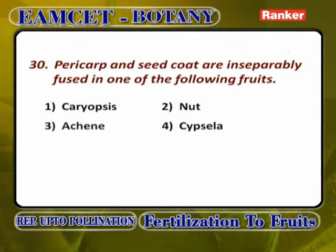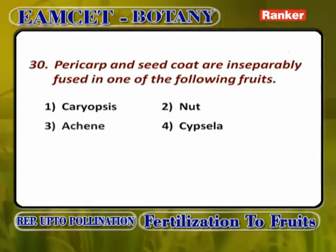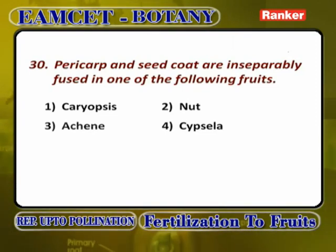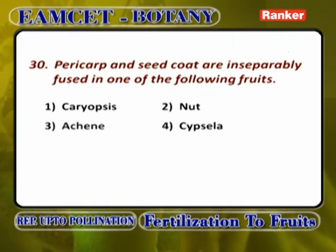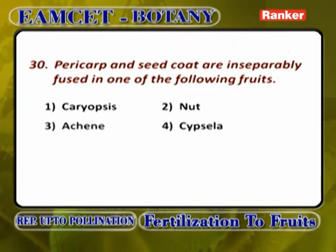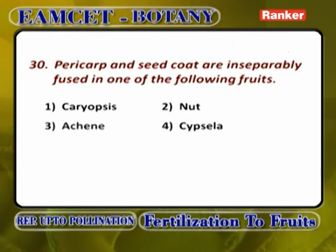Pericarp and seed coat are inseparably fused in caryopsis. In caryopsis, pericarp and seed coat are completely fused, which is why caryopsis is not regarded as a true fruit — it is popularly called a grain.